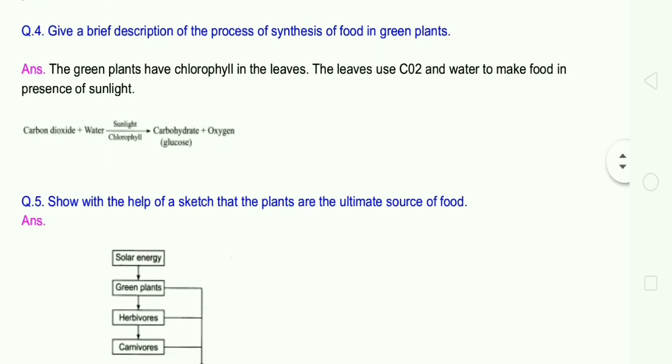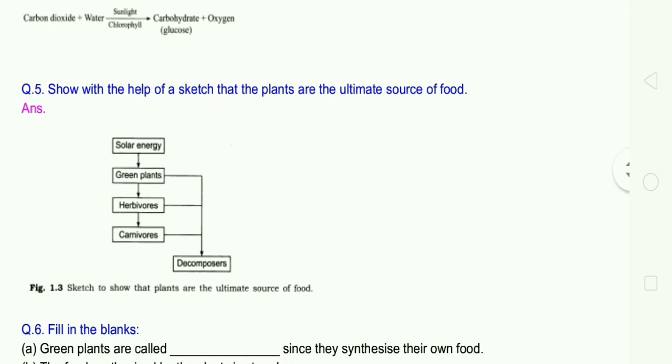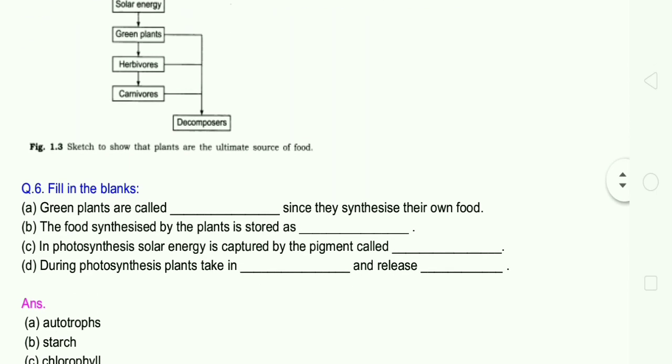Question number 5: Show with the help of a sketch that plants are the ultimate source of food. Answer: Solar energy, green plants, herbivores, carnivores, then decomposer. Green plants, herbivores, carnivores, decomposer.